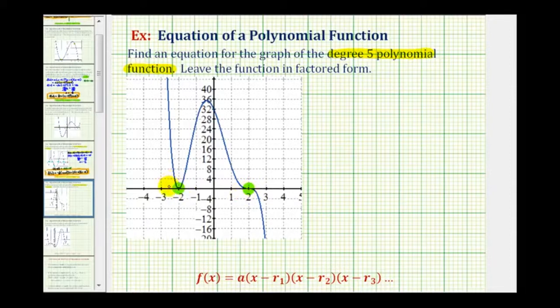Looking at the x-intercept or zero of negative two, notice how it touches the x-axis but does not cross the x-axis. That means this root or zero must have an even multiplicity. So we'll go and assume it has multiplicity two.